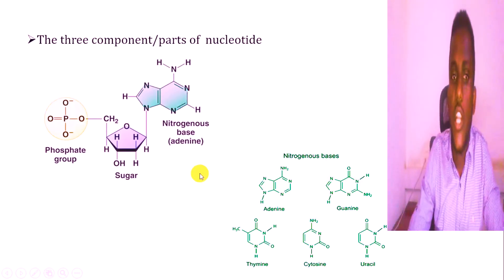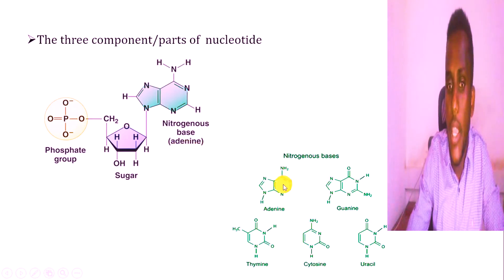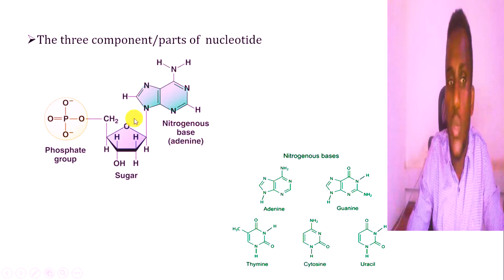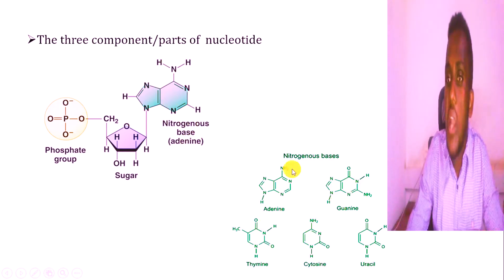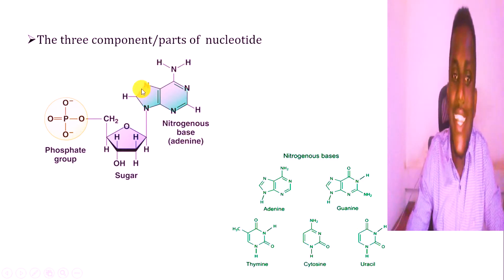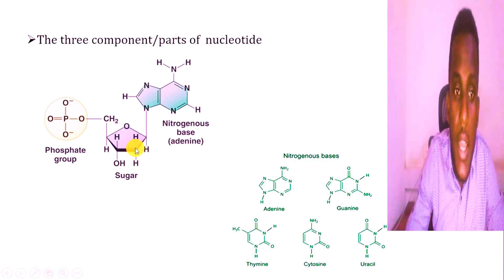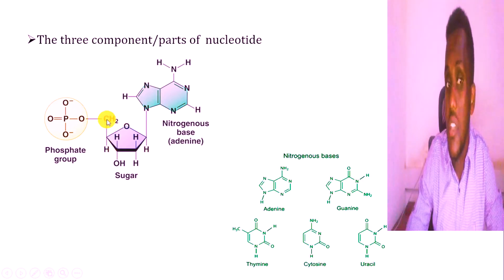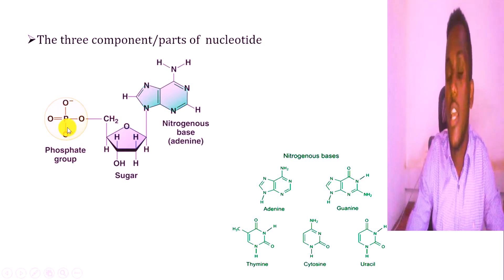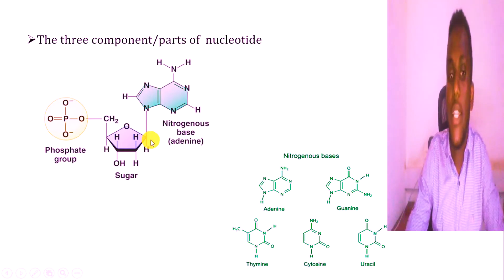So the component of nucleotide includes a nitrogenous base. The nucleotide is represented by the nitrogenous base structure. For example, that is adenine — the structure looks like adenine. We have a nitrogenous base, we have a sugar — a five-carbon sugar — and we have a phosphate group PO4. Here is the nucleotide, which is the building block of the genetic material, that is DNA.